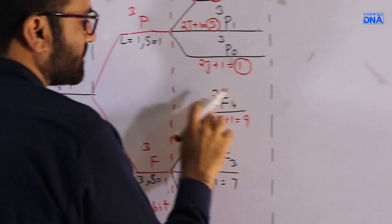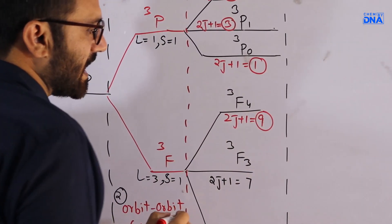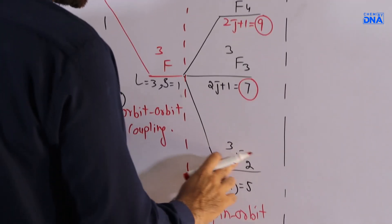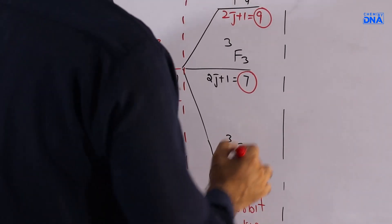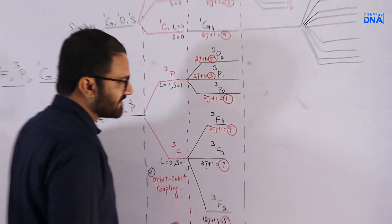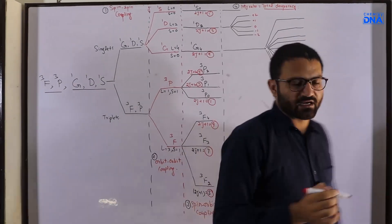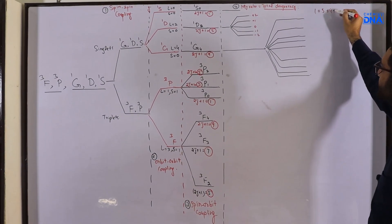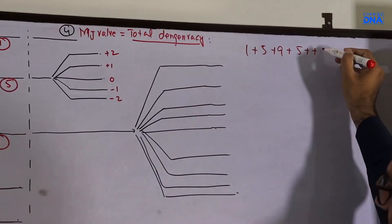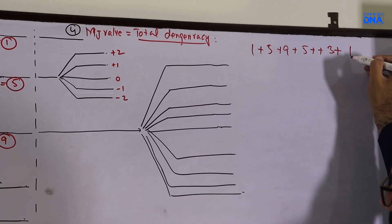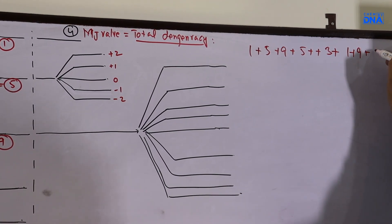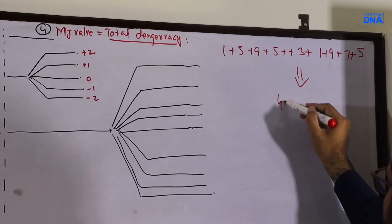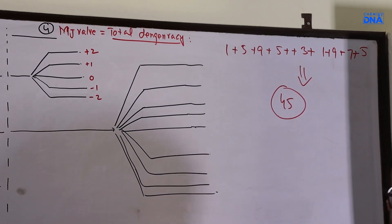For ³F₄ you get 9 mJ values, for ³F₃ you get 7, and for ³F₂ you get 5. The aggregate of all these mJ values gives us 45 total: 1 + 5 + 9 + 5 + 3 + 1 + 9 + 7 + 5 = 45 orbital degeneracies for the d2 system.